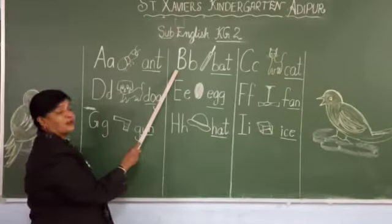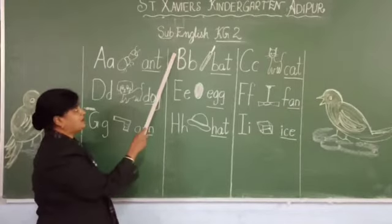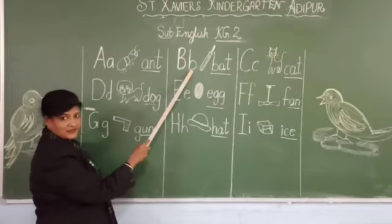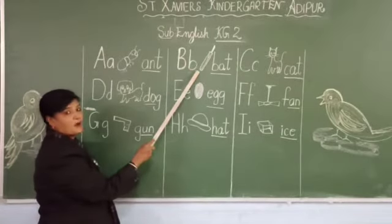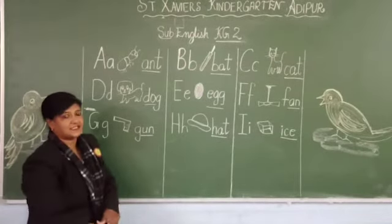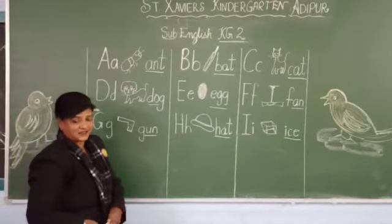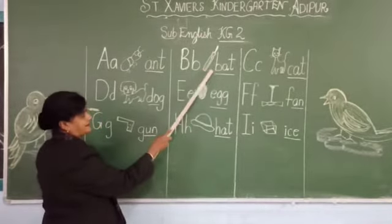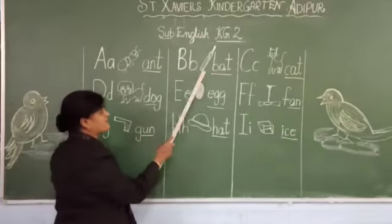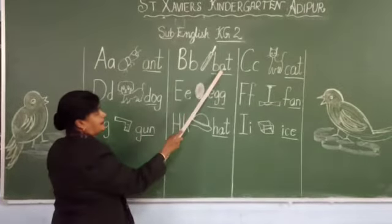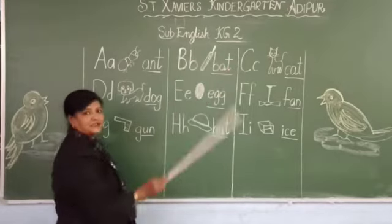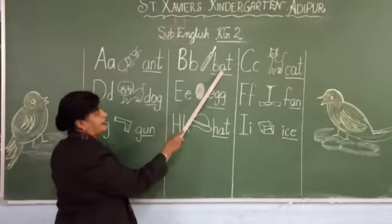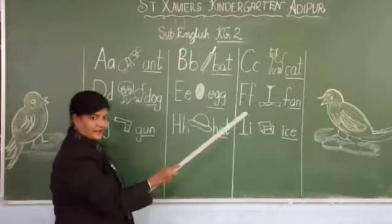The next alphabet is B. This is capital B, small b. B is for bat. Now we will spell bat. B, A, T. Bat. Say along with me? B, A, T. Bat.